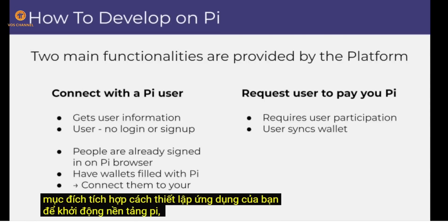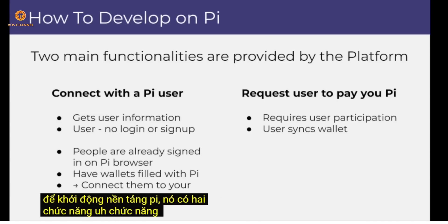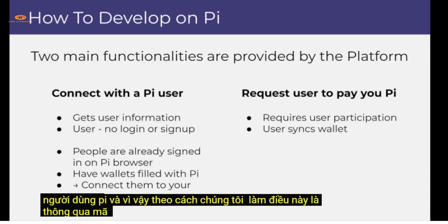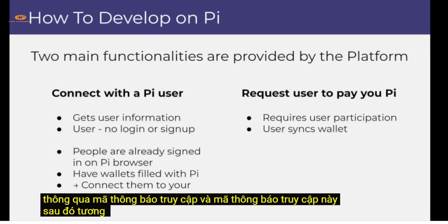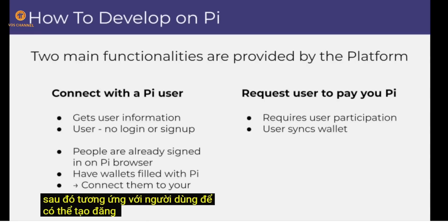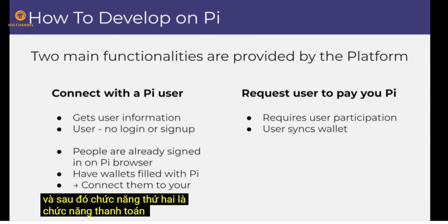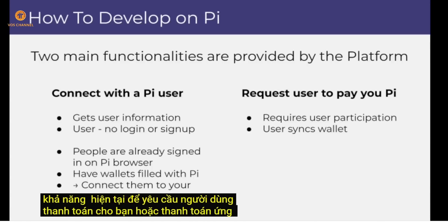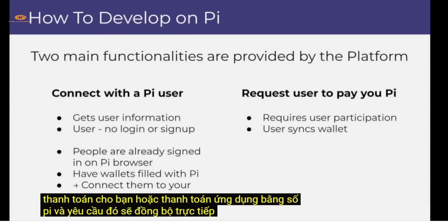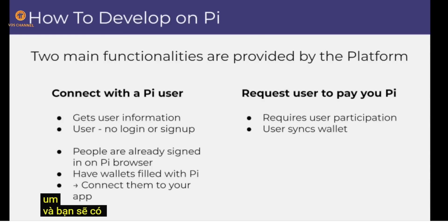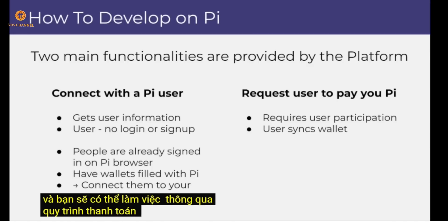The Pi platform has two functionalities. The first is connecting with a Pi user through an access token, which corresponds to a user to create a sign-in or display using that user's information. The second functionality is payment — the ability to request a user to pay you or the application in Pi, which syncs directly to their Pi wallet to facilitate the payment process.